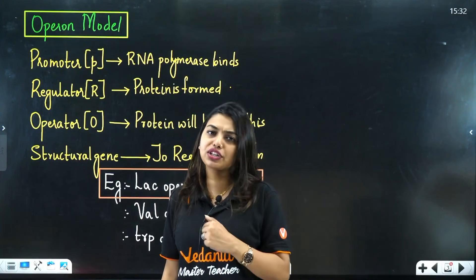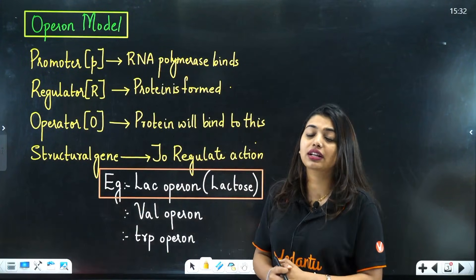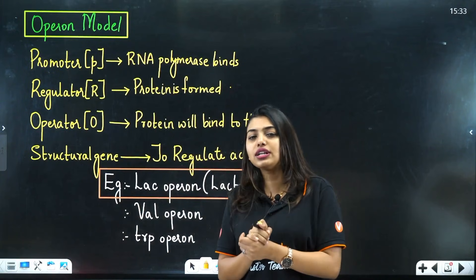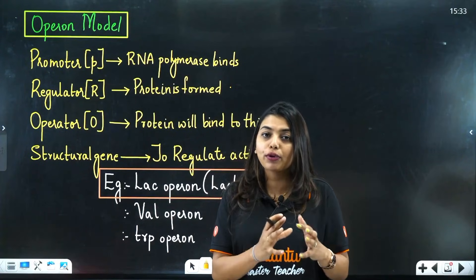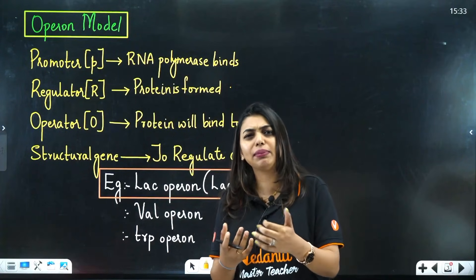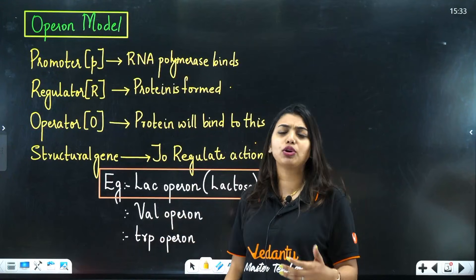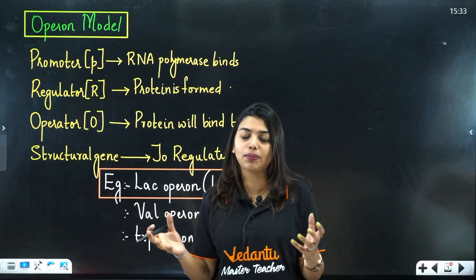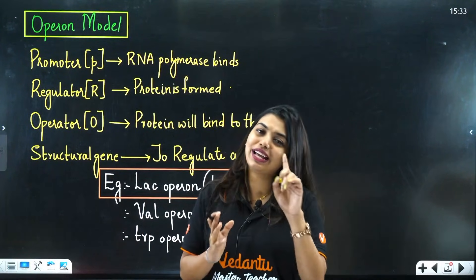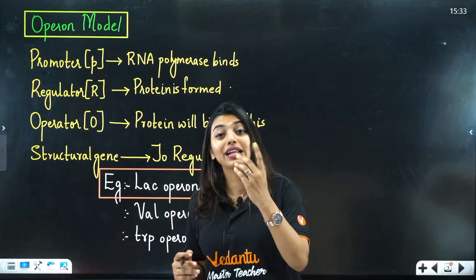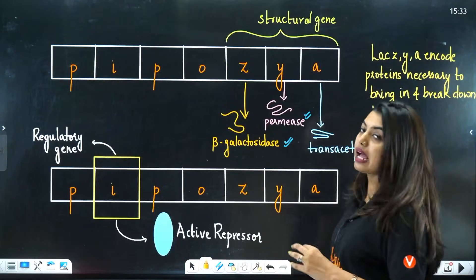The repressor protein binds to the structural genes to regulate their action. There are many operons such as the valine operon and the trp operon, but luckily you only have lac operon to study.